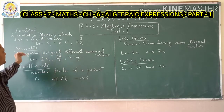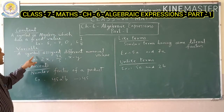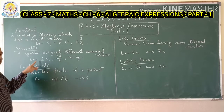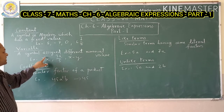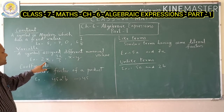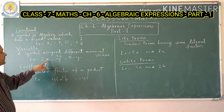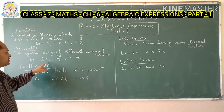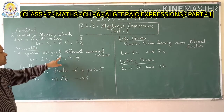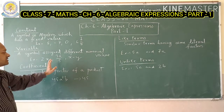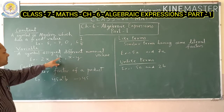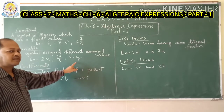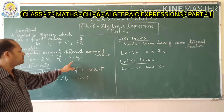Next, what is a variable? A variable is a symbol assigned different numerical values. For example, in 2x, x is a symbol with different numerical values — x cannot be fixed; it may be 2, 3, or any number. Similarly, in 3a/5, 'a' is a variable, and in x minus y, both x and y have different values, so they are variables.